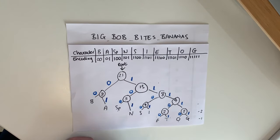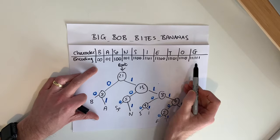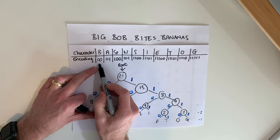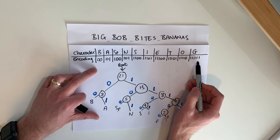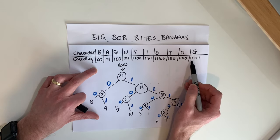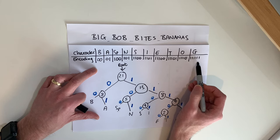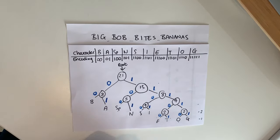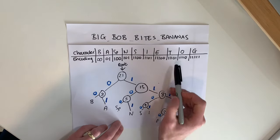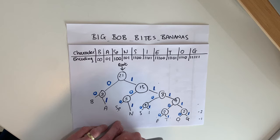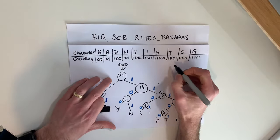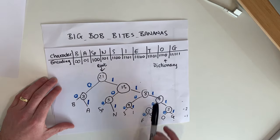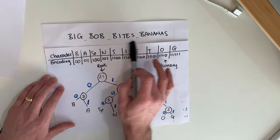Notice the principle has held: the most frequent character has the smallest binary representation, whereas the least frequent characters have the longest. G, E, O, and T each take five bits to store, whereas B and A — the most frequent characters — take only two bits each. That's how we create our Huffman tree and the encoding for each character, which we call the dictionary.